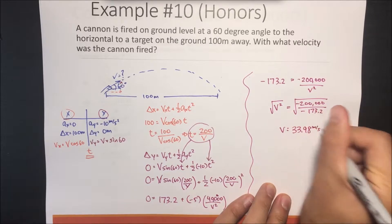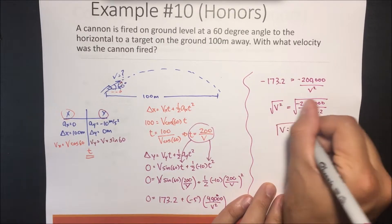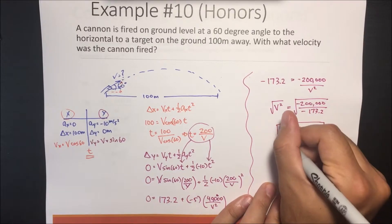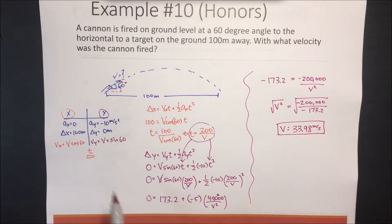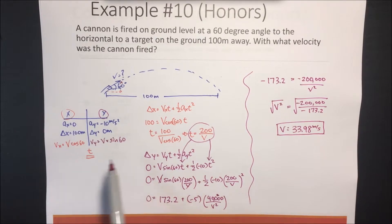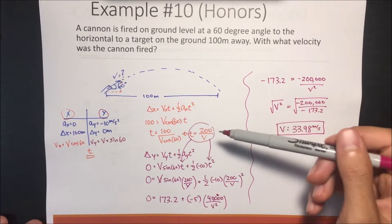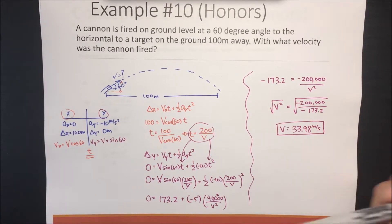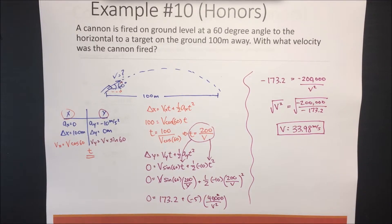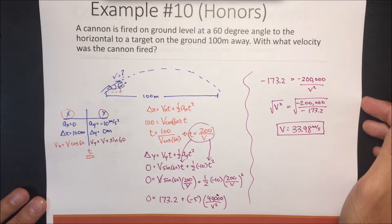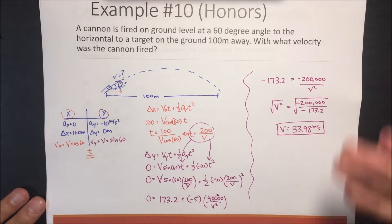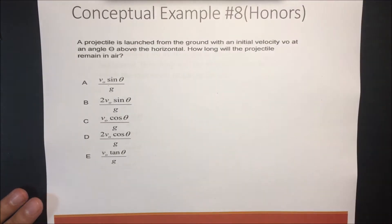That was pretty difficult, but when we don't have enough information, what we try to do is come up with two equations and then use substitution to find the unknown. Take it step by step.